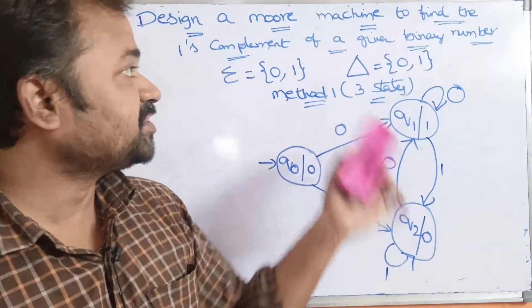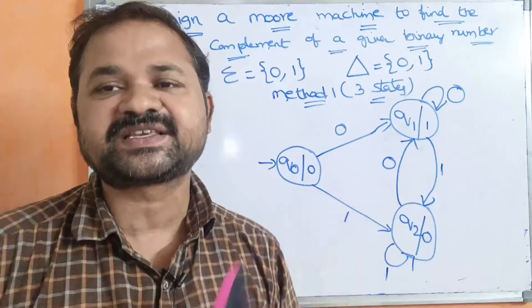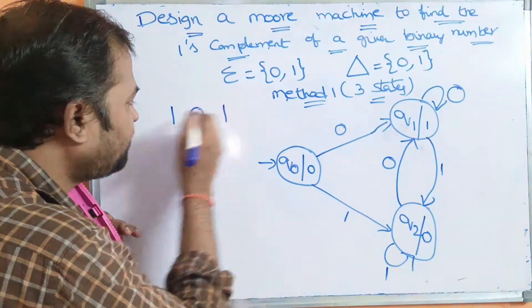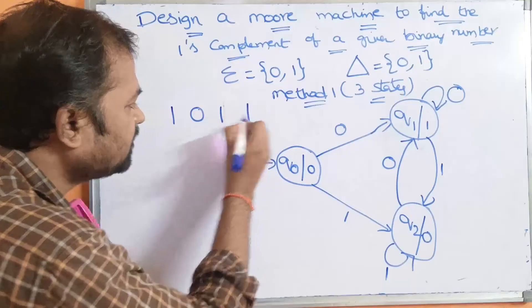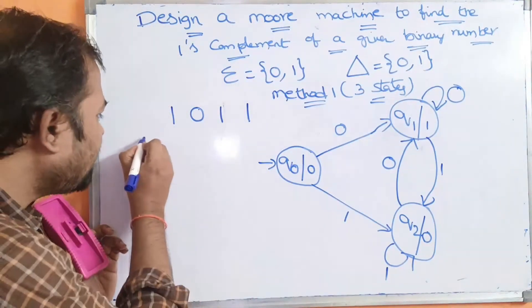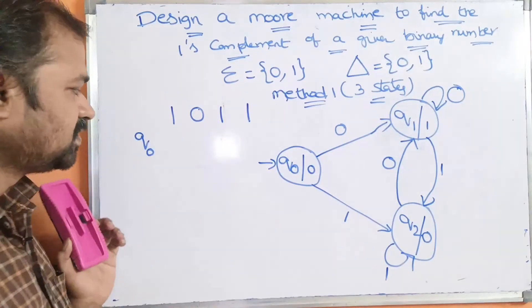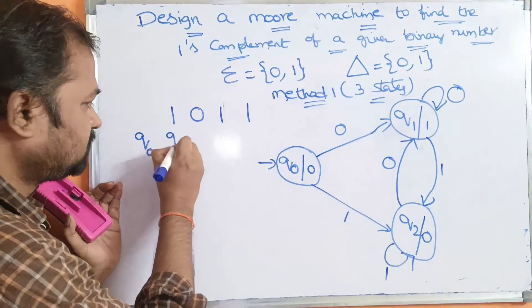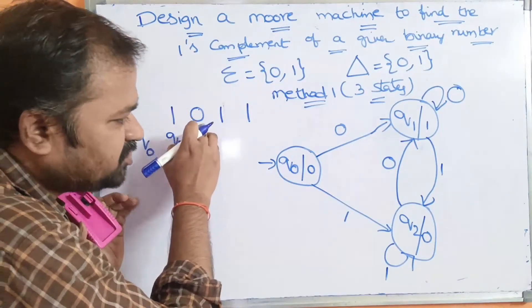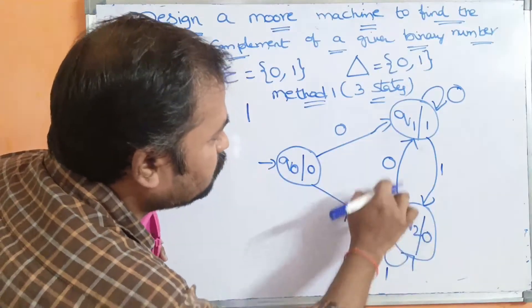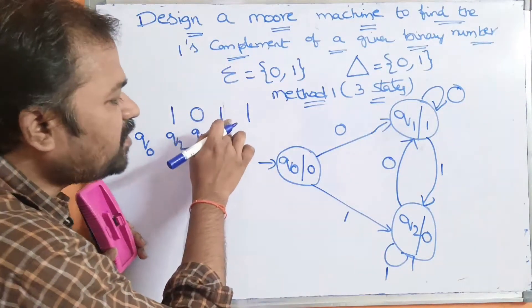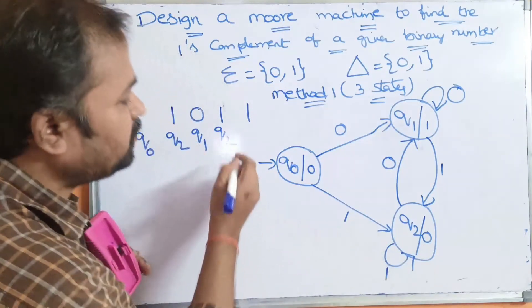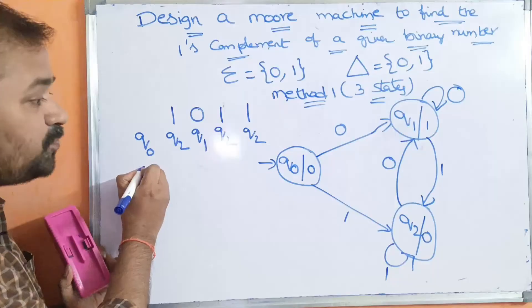This is the Moore machine for solving this problem. Let us verify it using the input string 1011, whose expected output is 0100. Initially we are at q0. q0 on 1 goes to q2. Next, q2 on 0 goes to q1. Next, q1 on 1 goes to q2. Finally, q2 on 1 goes to q2.